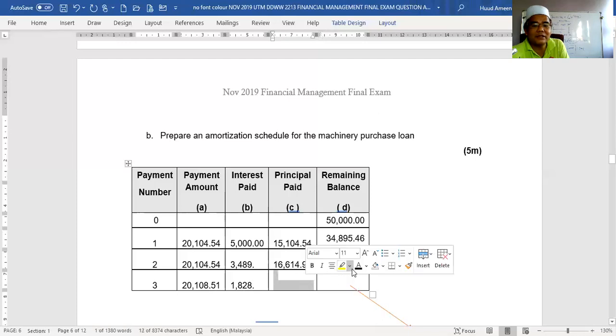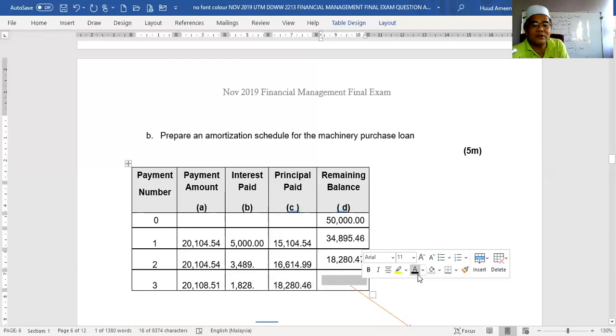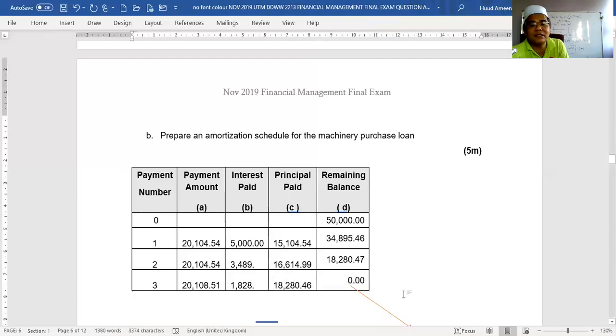And then this is a round figure, you just calculate at 10% times 18,000. This is very easy and you need to make sure that remaining balance is 0. So no balance anymore at the end of year 3. That means the borrower needs to, no need to pay after year 3. There is no balance.